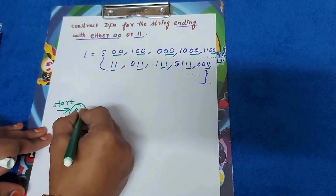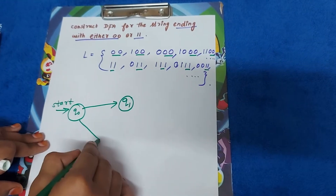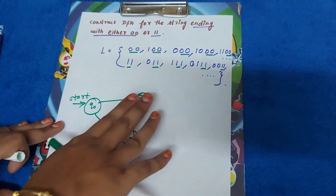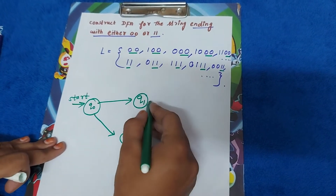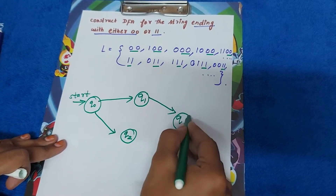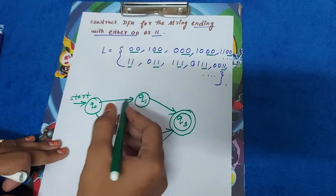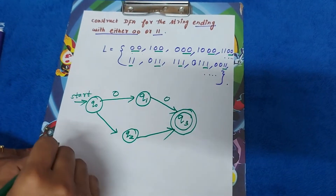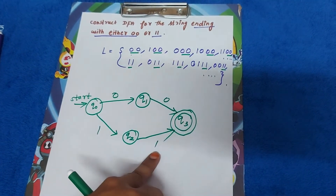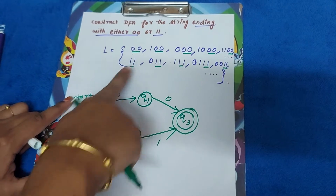Start state Q-naught, then Q1, Q2 — because we have both strings in the same language, so I am connecting this — then Q3 which is our final state. The string might have zero-zero or one-one.